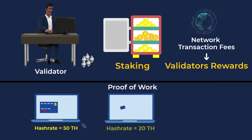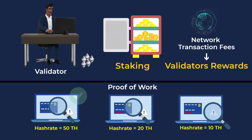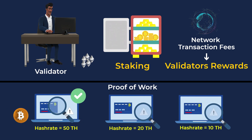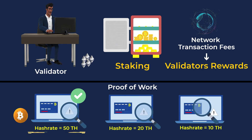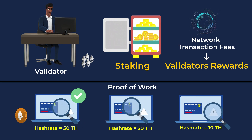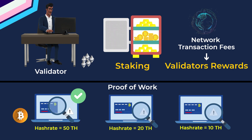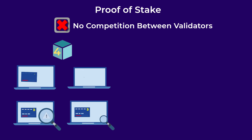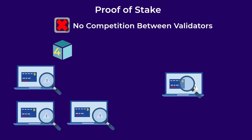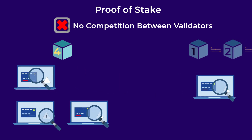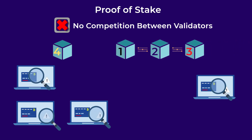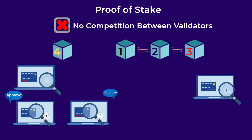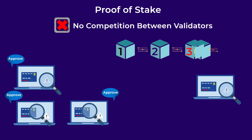In the proof-of-work mechanism, miners race against each other to solve the next block and earn the mining reward. The miner with the most powerful hardware has the highest chance of solving the next block faster than the other miners. However, in the proof-of-stake mechanism, there is no competition or race between validators. When a new block of transactions needs to be validated, the network chooses a validator to verify this block and earn the transaction fees as a reward. The other validators will then either approve his work or reject it if he validated faulty transactions.